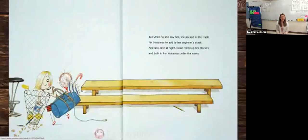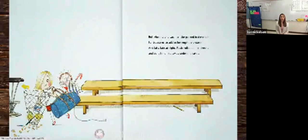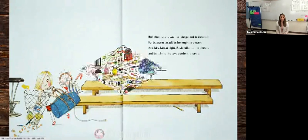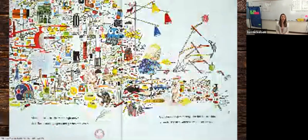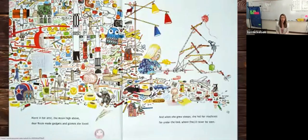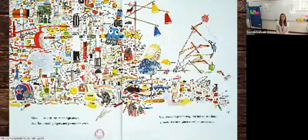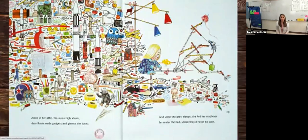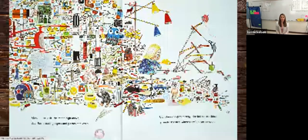And late, late at night, Rosie rolled up her sleeves and built in her hideaway under the eaves. Alone in her attic, the moon high above, dear Rosie made gadgets and gizmos she loved. And when she grew sleepy, she hid her machines far under the bed where they'd never be seen.